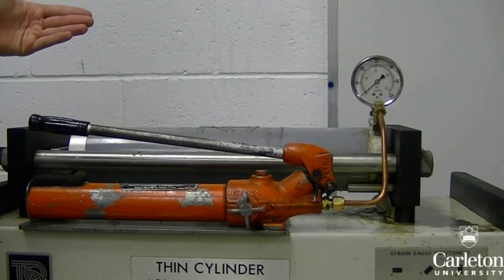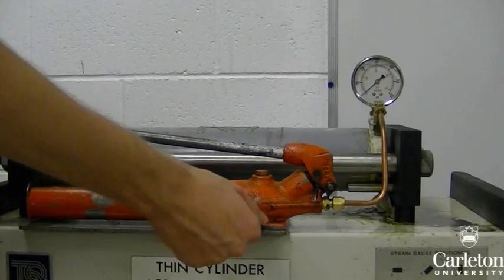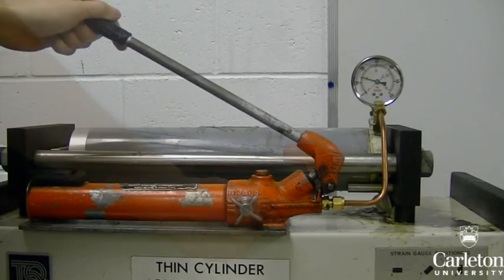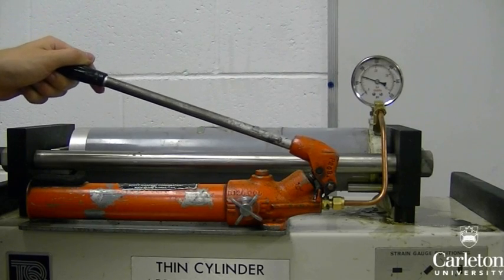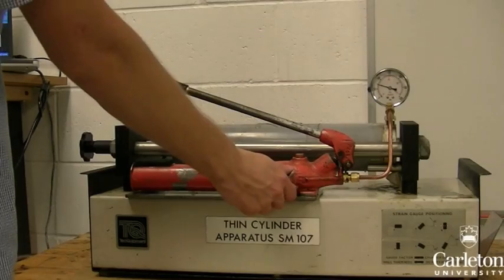For the open ends case, make sure that the cylinder is braced. It should still be from the last test. Close the valve and apply an internal pressure of 1.0 megapascals. Record the strain from all six gauges. Then open the valve to release the pressure.